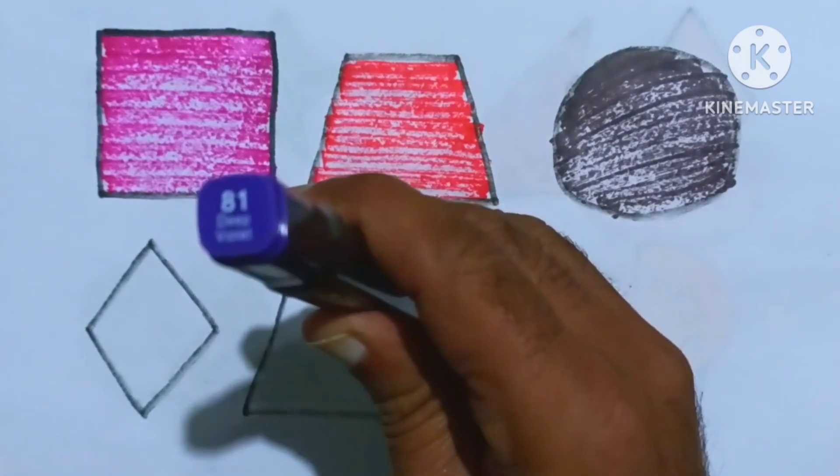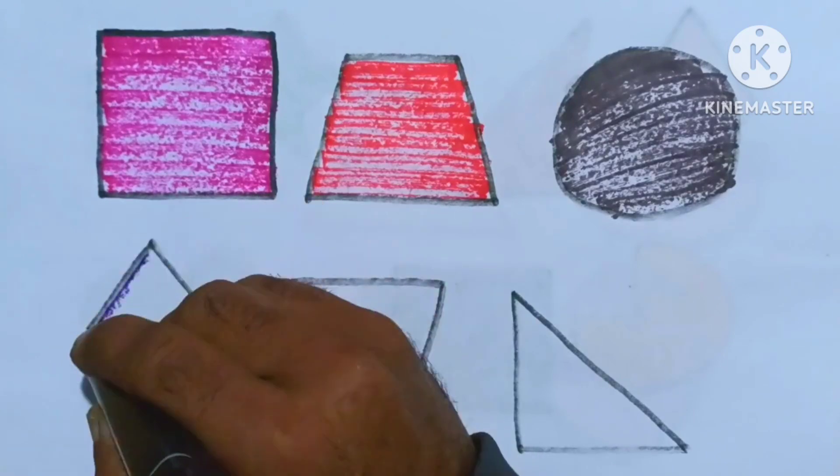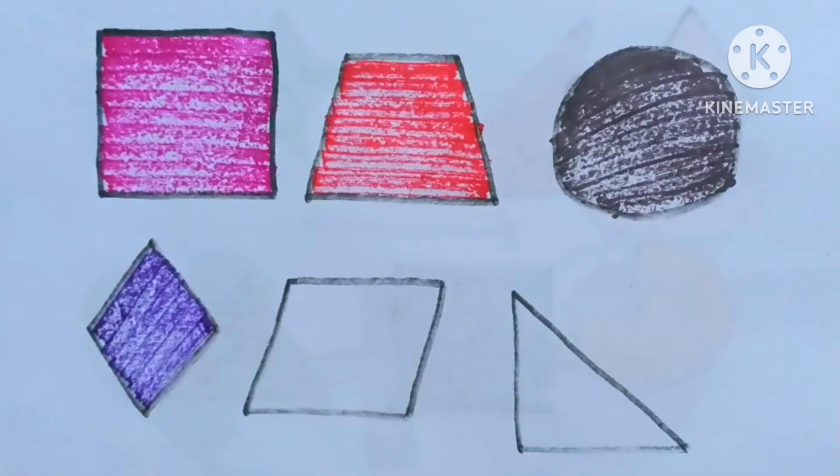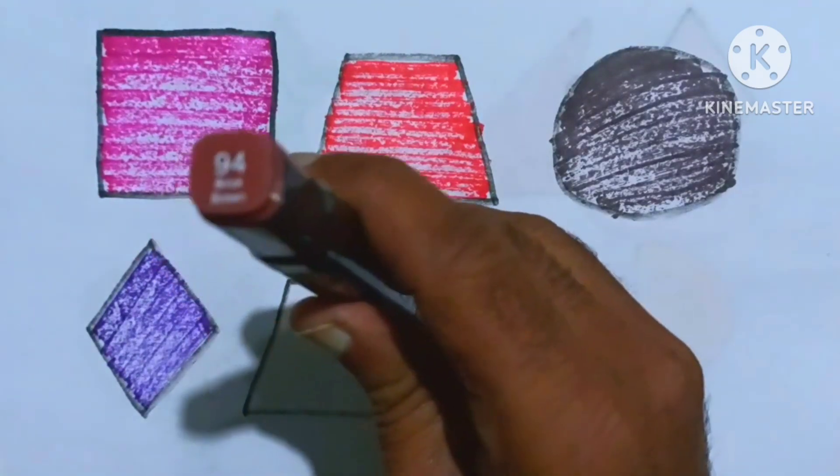Deep violet color. Deep violet color, kids. Brick brown color.